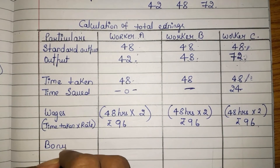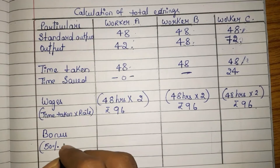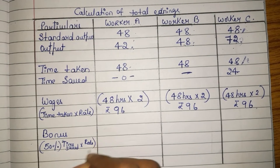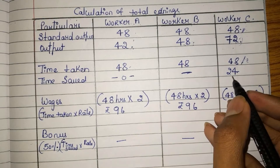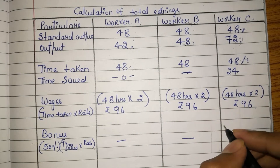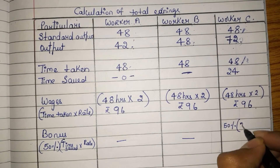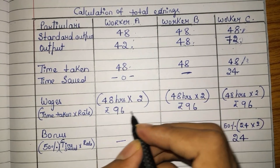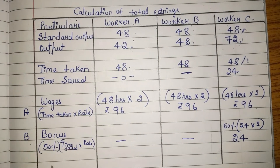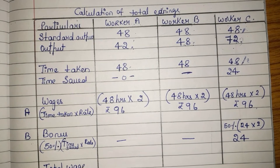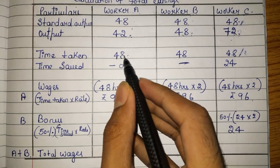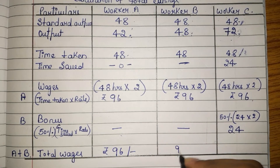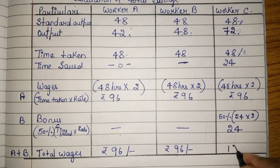Now we need to provide a bonus. Bonus under the Halsey plan is 50% of time saved multiplied by rate. Workers A and B have not saved any time, so their bonus is zero. Worker C has saved 24 hours, so bonus = 50% × 24 × 2 = rupees 24. Total wages: A = 96 + 0 = rupees 96; B = 96 + 0 = rupees 96; C = 96 + 24 = rupees 120.